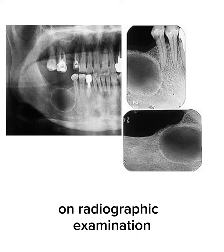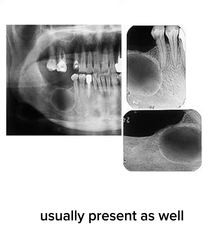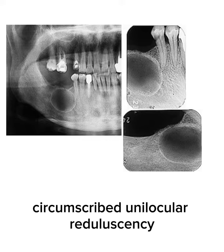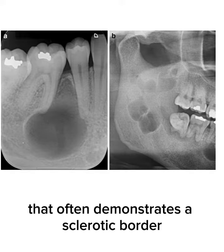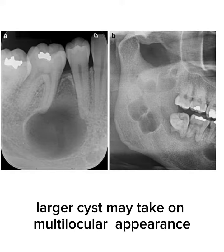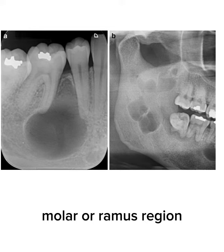On radiographic examination, a small odontogenic keratocyst usually presents as a well-circumscribed unilocular radiolucency that often demonstrates a sclerotic border. Larger cysts may take on a multilocular appearance, especially lesions that occur in the mandibular molar or ramus region.